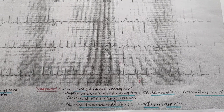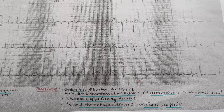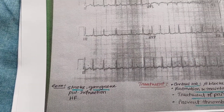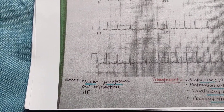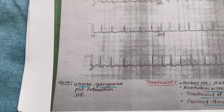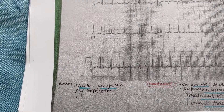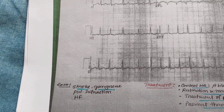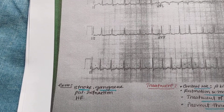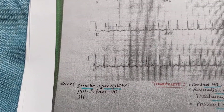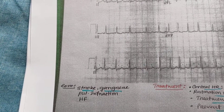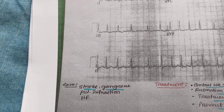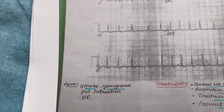Now thromboembolism — if you don't prevent thromboembolism, then you will have some complications. First of all, if thromboembolism occurs, then you will have a stroke. And if you don't prevent thromboembolism, then you will have gangrene formation. This is a must: stroke and gangrene. You will also have pulmonary infarction and heart failure.